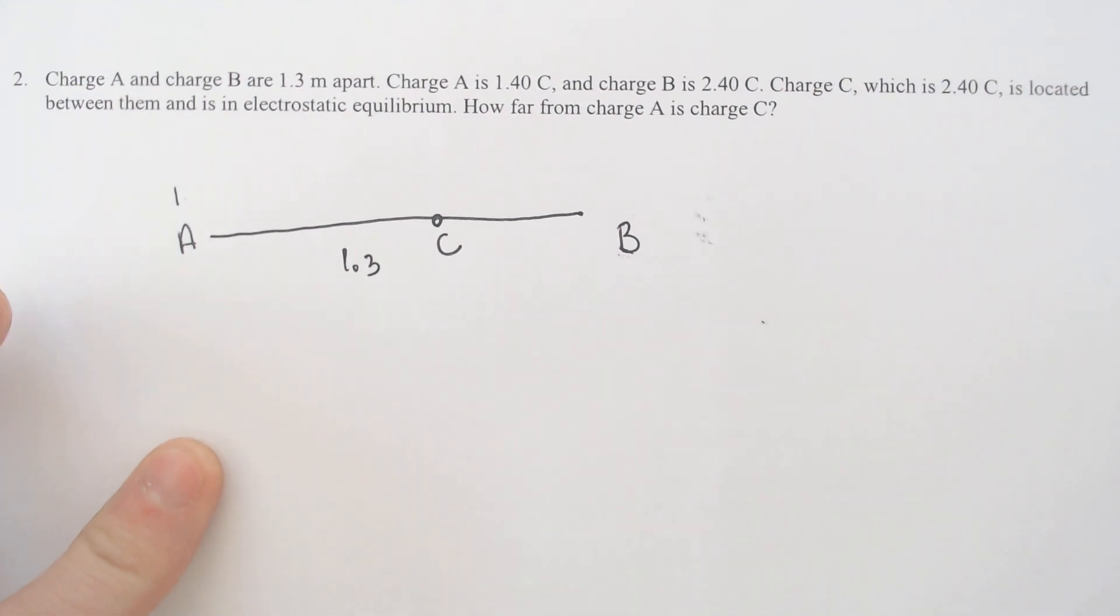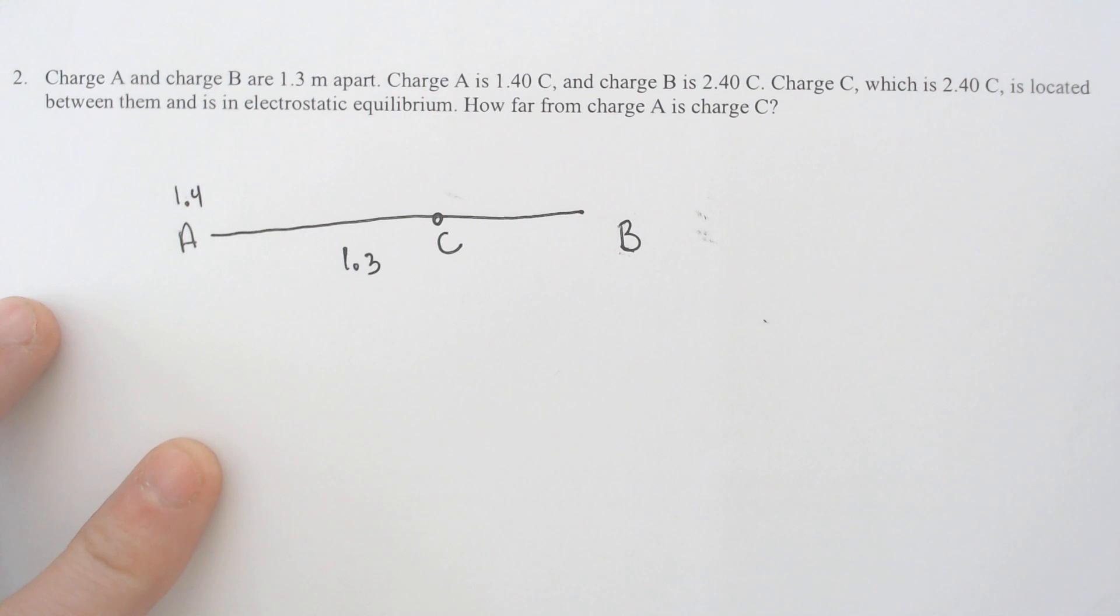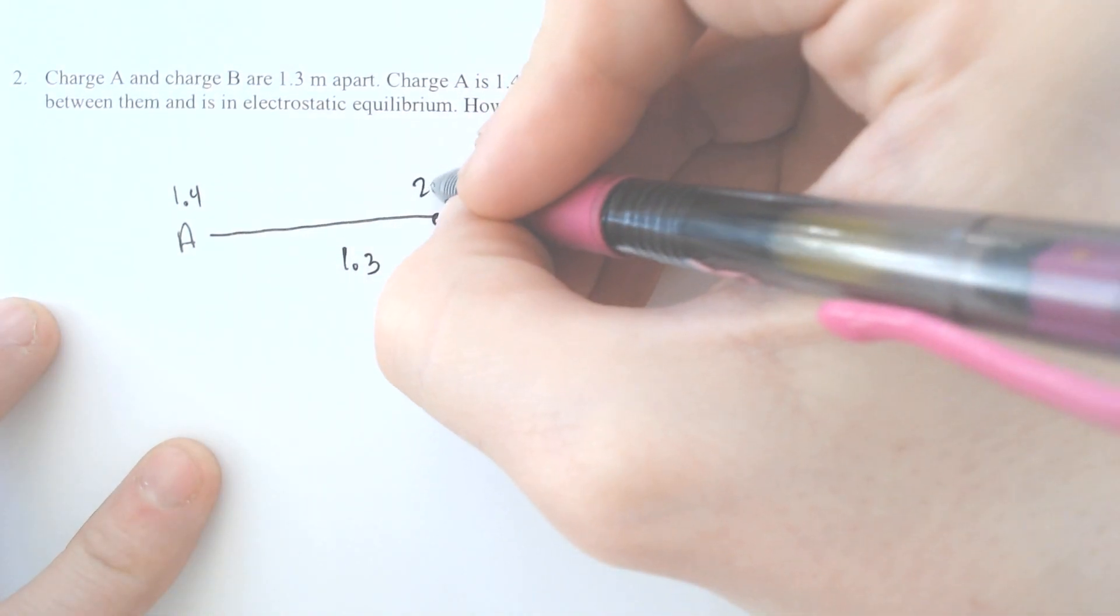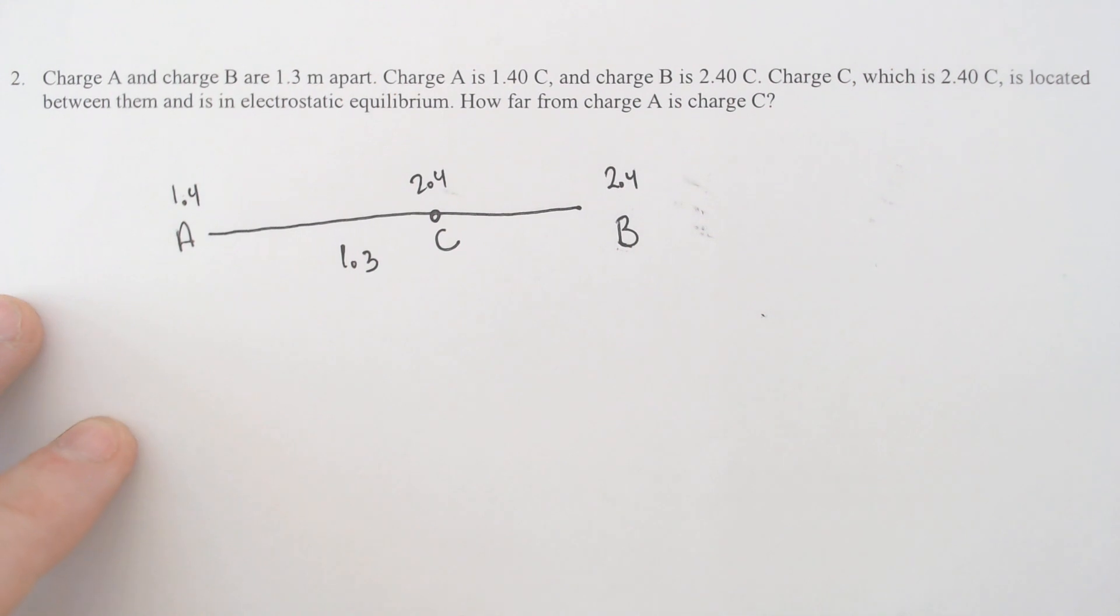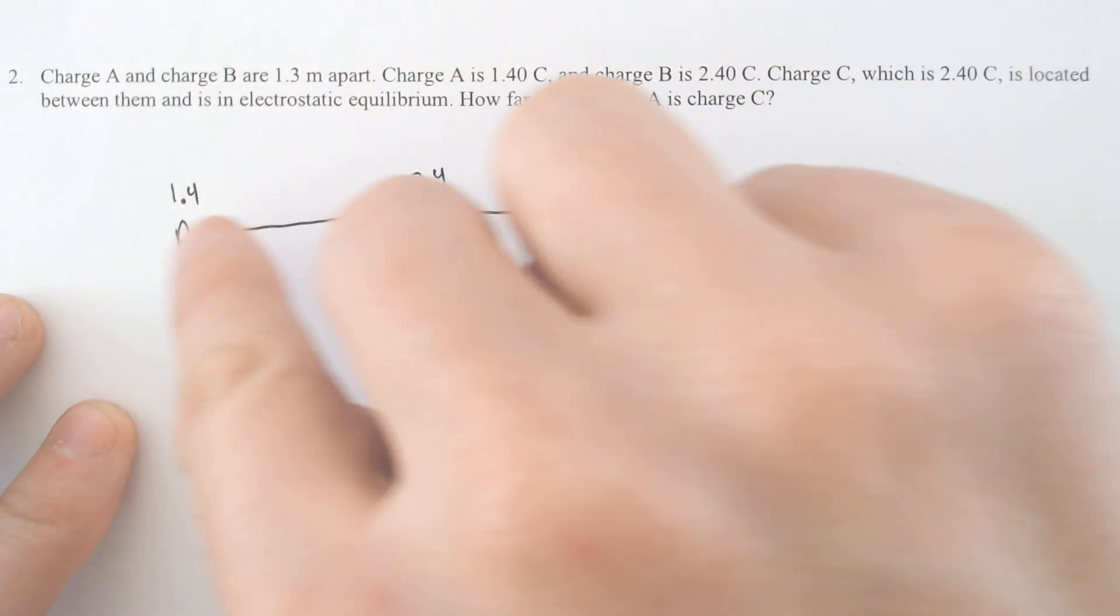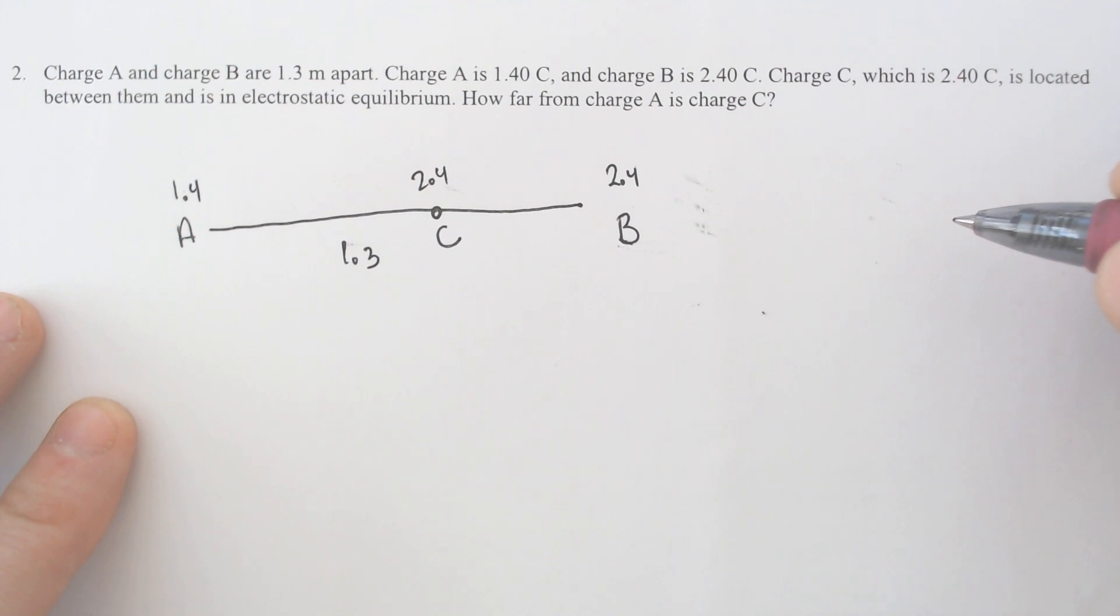And the only thing you know is that charge A has a 1.4 Coulomb charge and charge B has a 2.4 Coulomb charge and charge C which is also 2.4 Coulombs is right there. And we wanted to figure out what is the location of point C from A. The 1.3 is the entire distance all the way across.